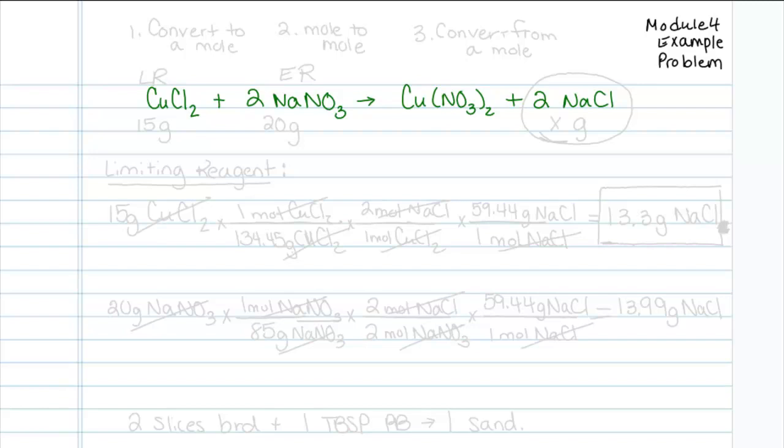But let's again write down what we're given. We're given 15 grams of copper chloride, we're given 20 grams of sodium nitrate, and we want to know how many grams of sodium chloride are going to form.